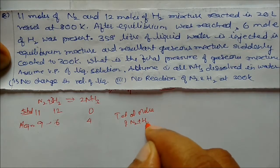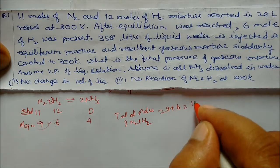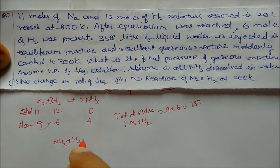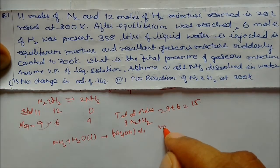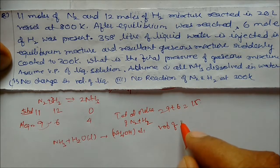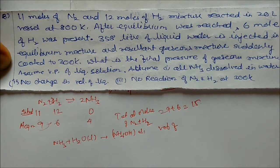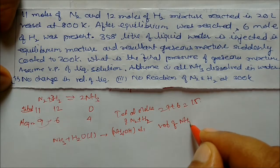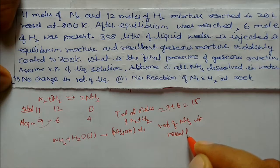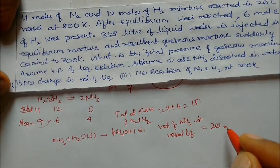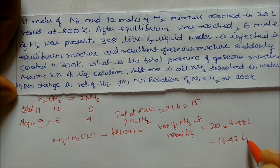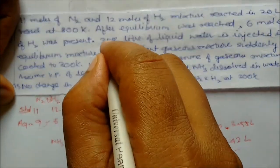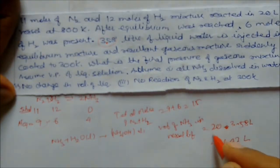Total moles of nitrogen and hydrogen at equilibrium: 9 + 6 = 15 moles. Since all ammonia dissolves in water, ammonia is removed from the gas phase. The volume available for gas in the vessel = 20 liters minus the water injected (3.5 liters) = 16.5 liters.